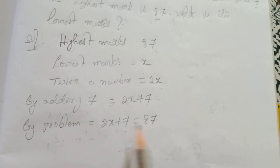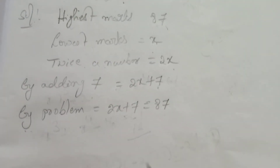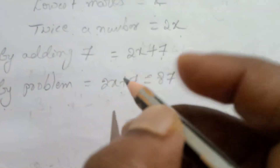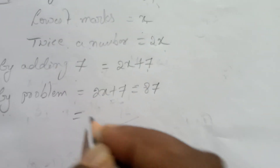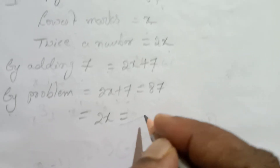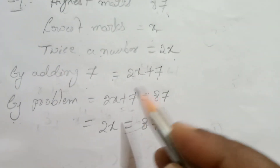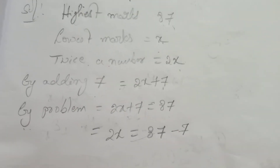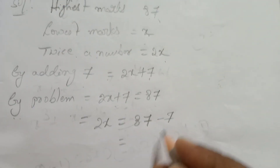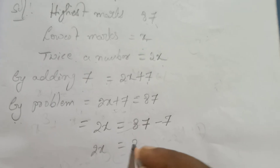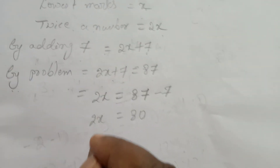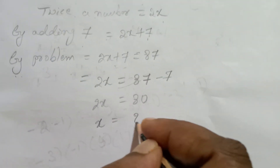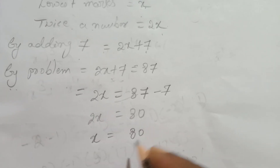This problem gives us 2x plus 7 equal to 87. Moving 7 to the right side, 2x is equal to 87 minus 7, which is 80. So 2x equals 80, and x equals 40.